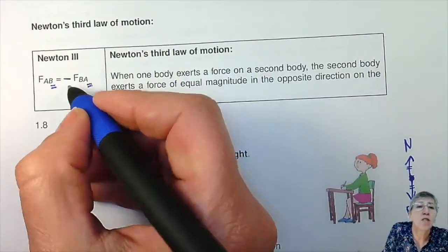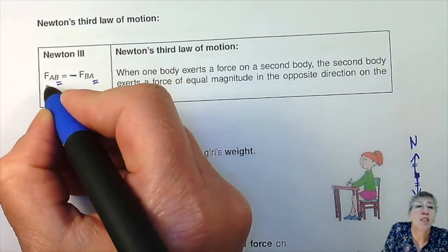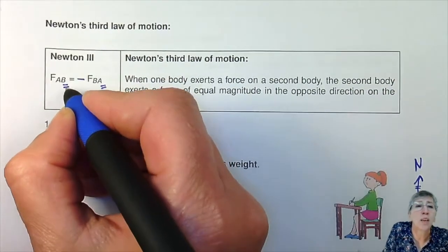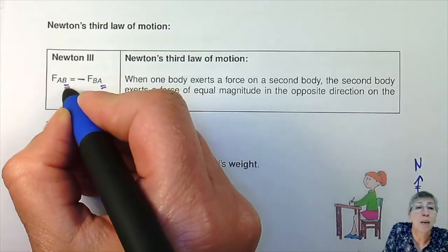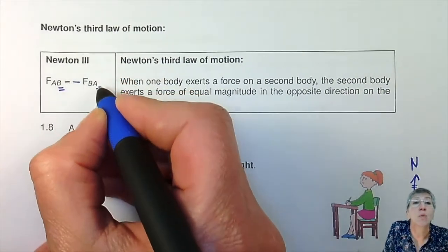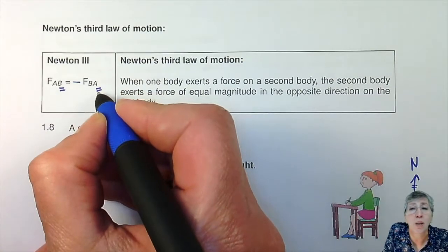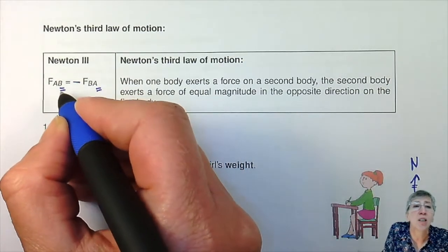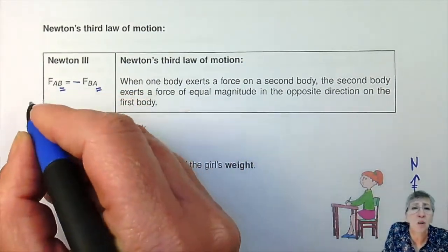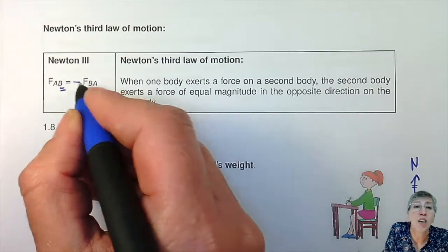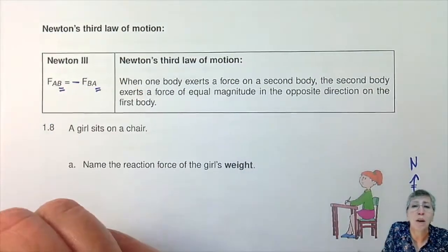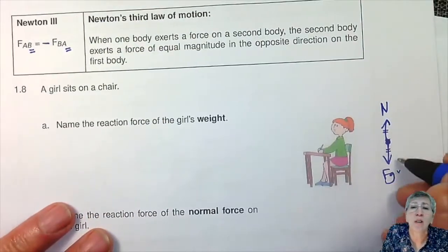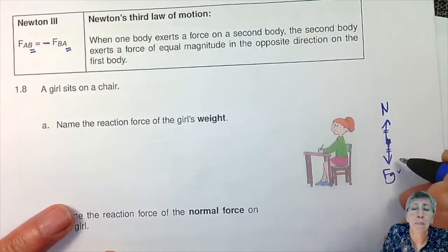A Newton's third pair is always working on different objects. The one is working on B and the other is working on A — like man on crate, crate on man. They're always working on different objects, so those two can't be a pair.